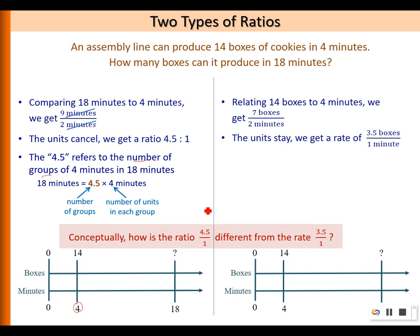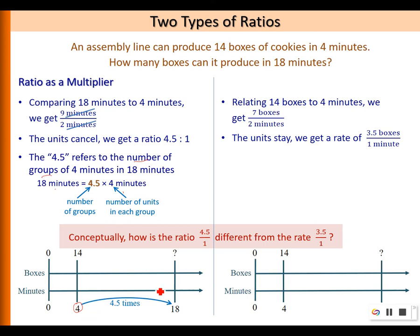This is the definition of multiplication: number of groups times number of units in each group. In this case, the 4.5 can be viewed as a multiplier. We are using this ratio as a multiplier to multiply the 4 minutes to get 18 minutes — 4.5 times 4 gives you 18 minutes. That's the relationship between the two quantities of the same type.